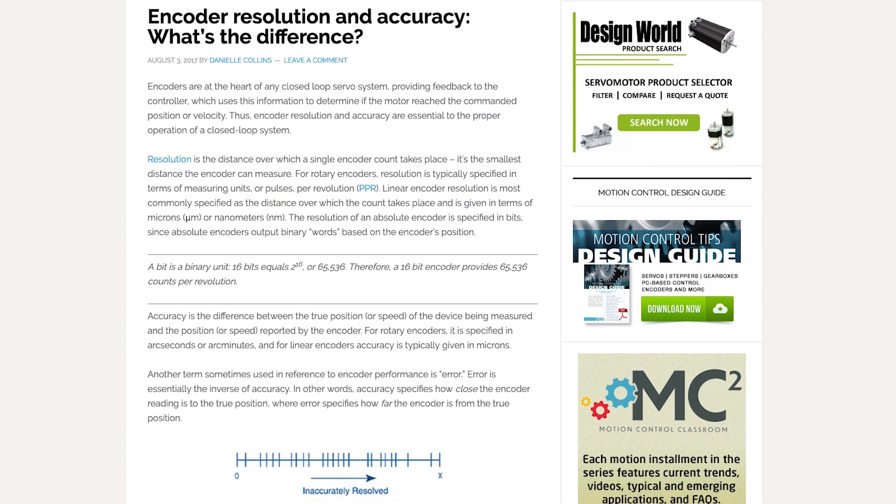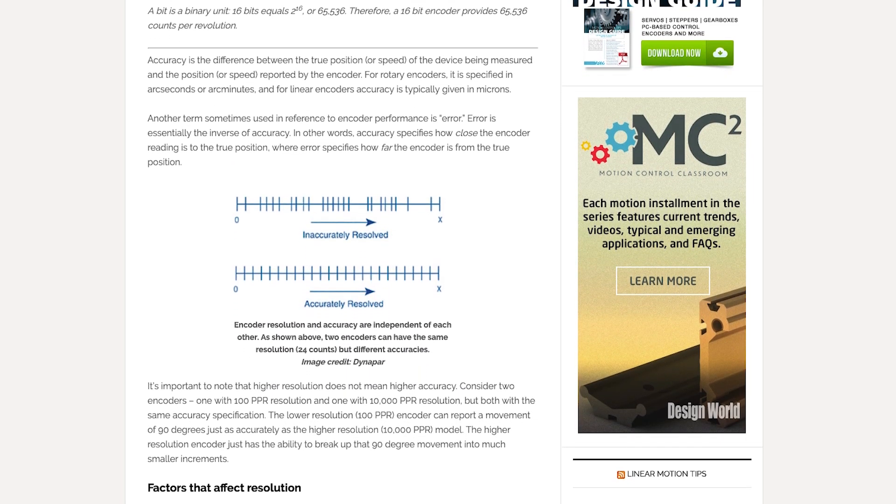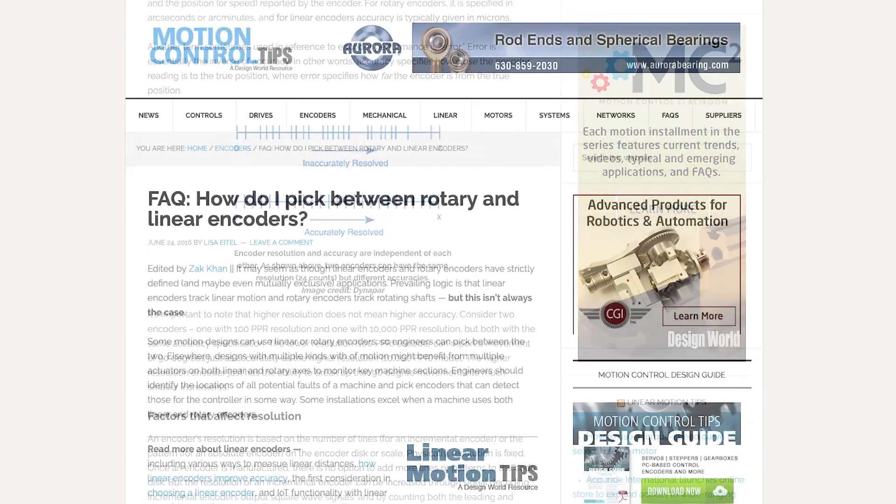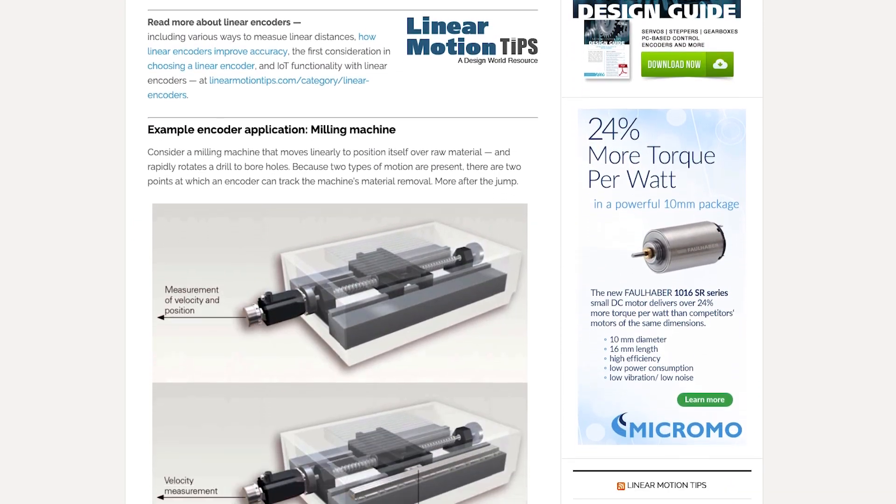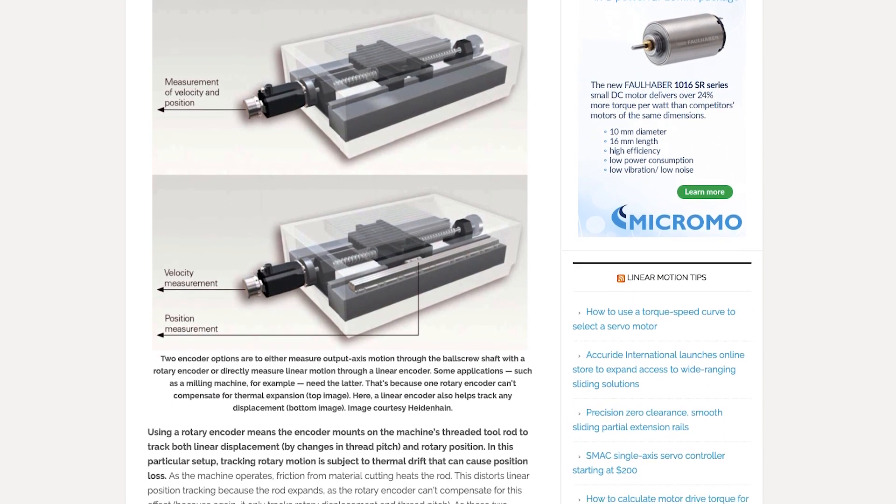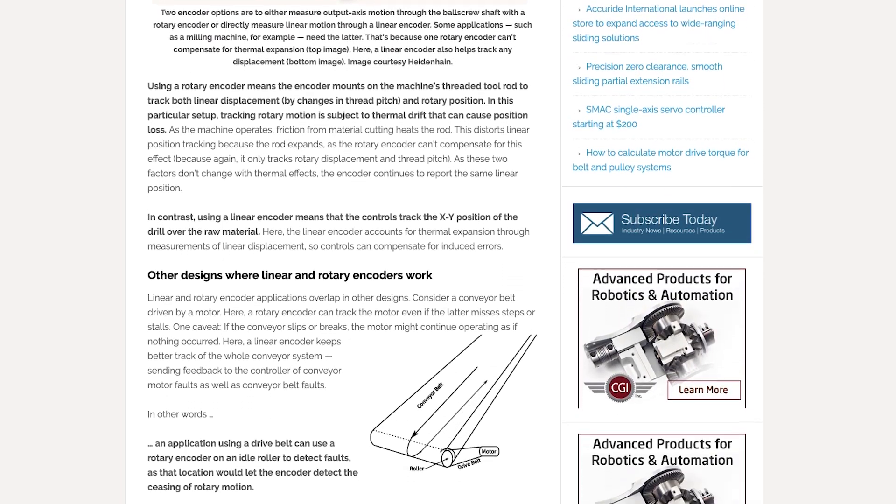It explains quadrature encoding and how it can be used to boost encoder resolution. This installment of Motion Control Classroom also includes primers on how to decide whether you need a rotary or a linear encoder and how to determine what resolution your application requires.